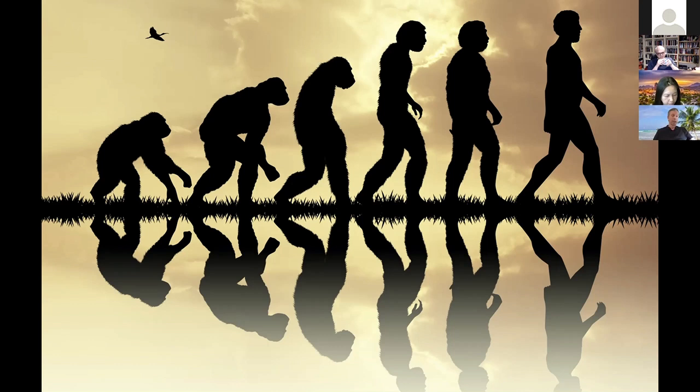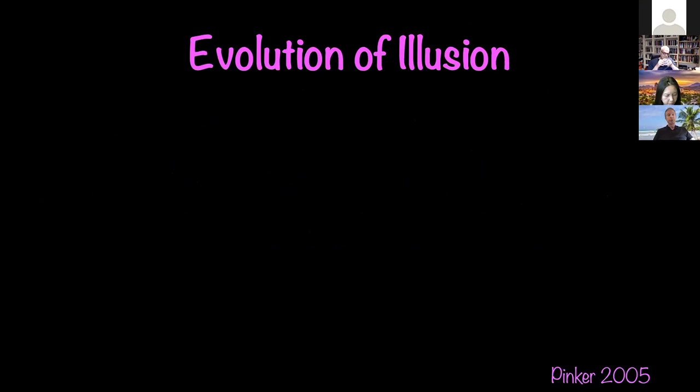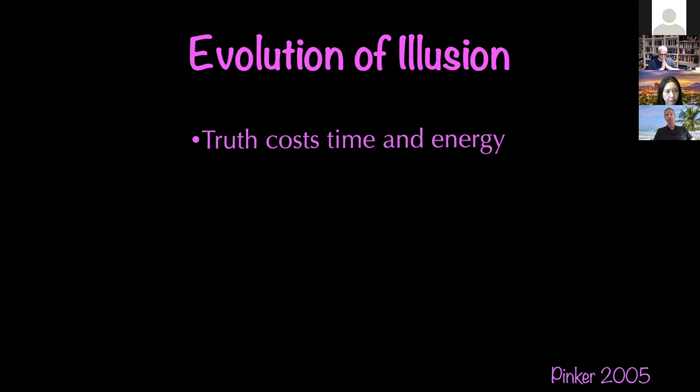Evolution could lead us to have false beliefs — this view is actually well supported. Steven Pinker, in his paper 'How Does the Mind Work,' canvasses five different reasons why evolution could favor illusion. For example, it's very expensive to compute the truth — truth costs time and energy. If it takes you a half hour to figure something out truthfully when a heuristic takes ten minutes, you should use the heuristic. Much of cognition and perception is non-demonstrative inference, and the prior assumptions we make are typically fallible.